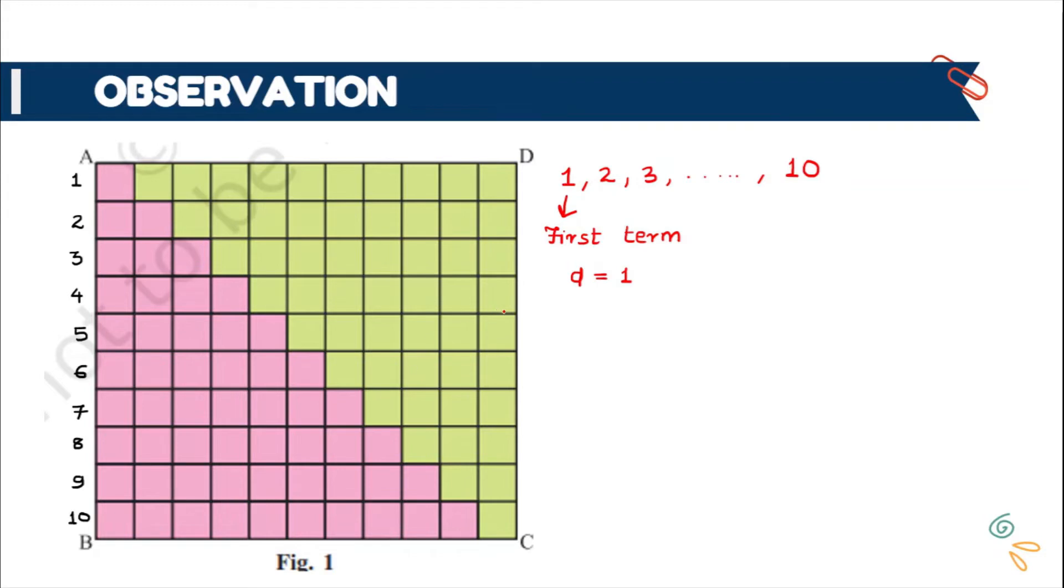Now if I ask you to calculate the sum of the first 10 terms using calculator or by counting these pink boxes, you will find its value to be 55. You can cross check it by yourself.